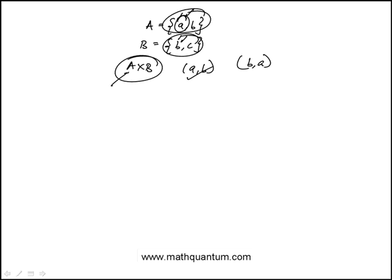(B,A): B here is in the first, but there is no A in the set B. So this one does not belong to the Cartesian product A cross B.